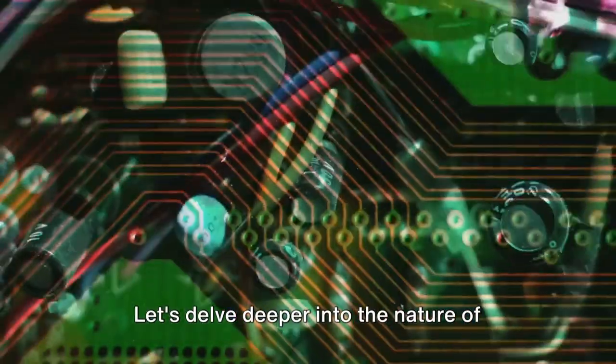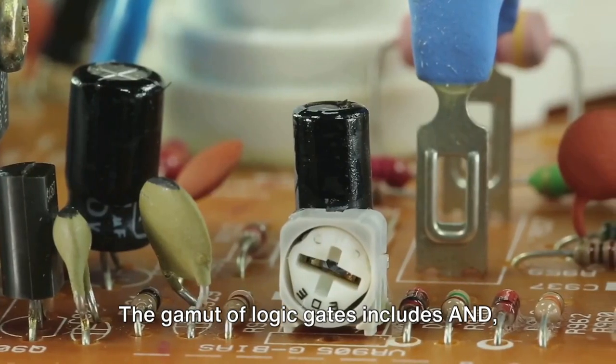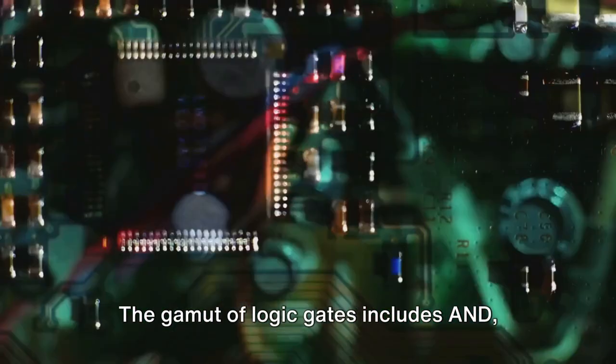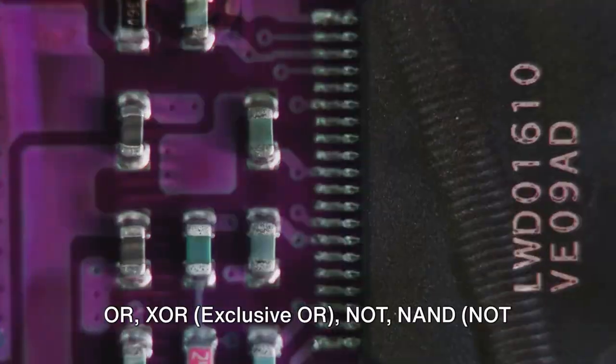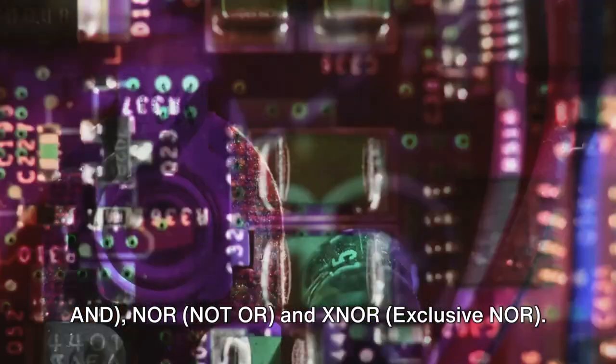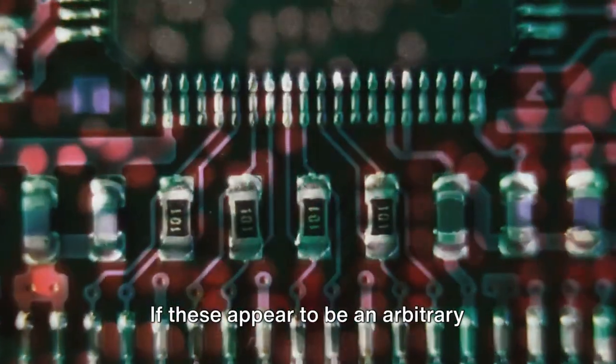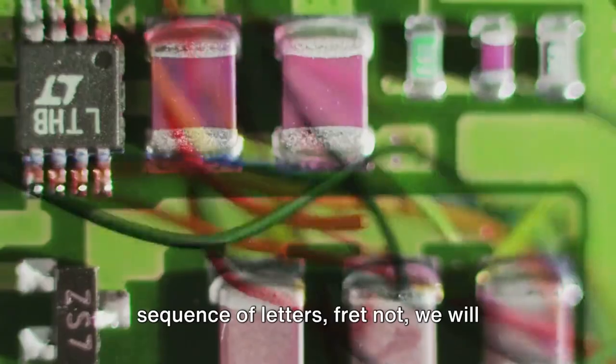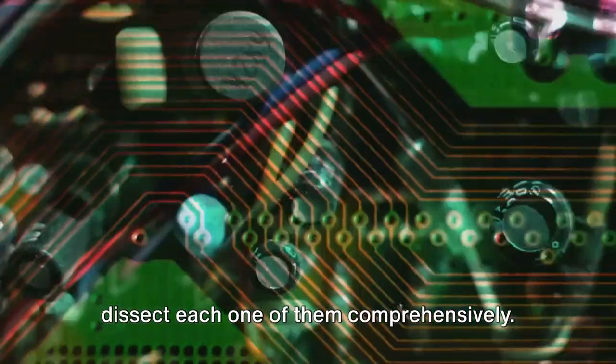Let's delve deeper into the nature of these logic gates. The gamut of logic gates includes AND, OR, XOR, EXCLUSIVE OR, NOT, NAND, NOT AND, NOR, NOT OR, and XNOR, EXCLUSIVE NOR. If these appear to be an arbitrary sequence of letters, fret not, we will dissect each one of them comprehensively.